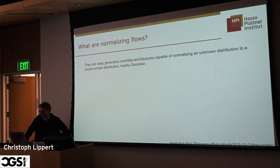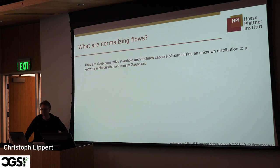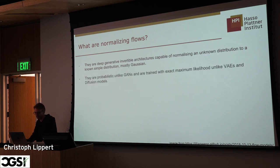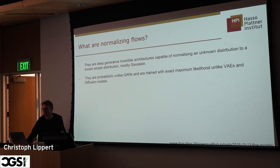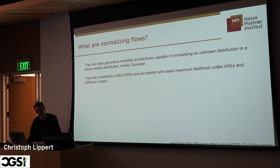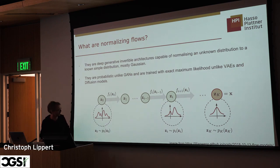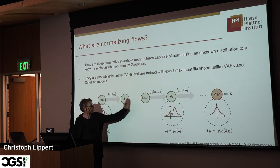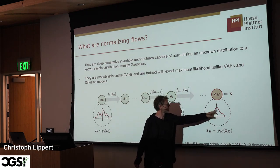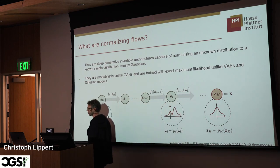Normalizing flows are generative models that are invertible. The nice thing is that they are capable of normalizing an unknown distribution by transferring it into a simple distribution — usually a Gaussian. GANs are not probabilistic; VAEs maximize the evidence lower bound; but flows can work directly with the data likelihood. They use a series of invertible transformations to go from a complicated data distribution to a simple one, and we can go back and forth.